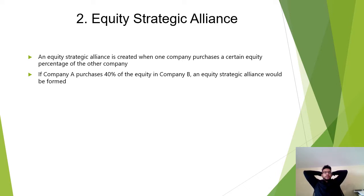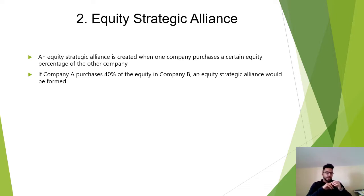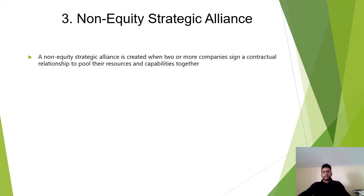An equity strategic alliance is created when one company purchases a certain equity percentage of the other company. For example, if Coca-Cola says 'I don't want to buy your entire company, I want to buy 40% of Lays' equity so we can work together as strategic allies to capture more of the market' — that is an equity strategic alliance.